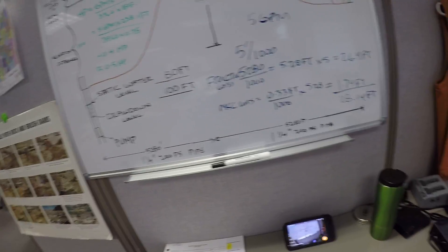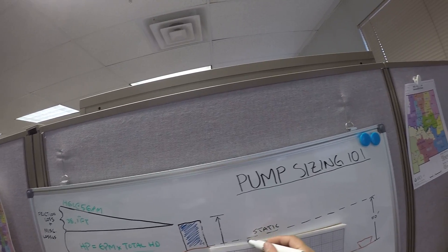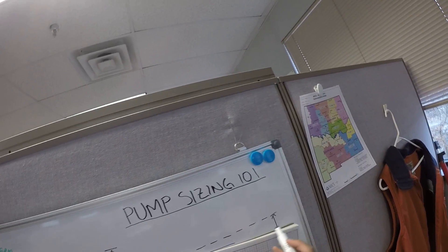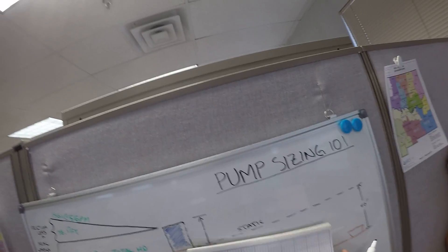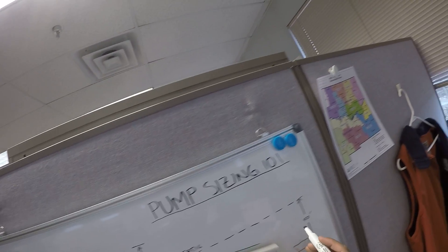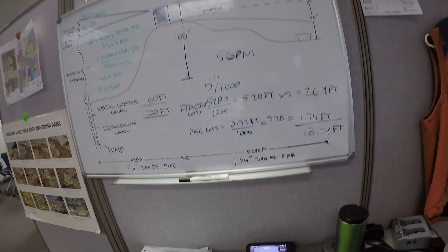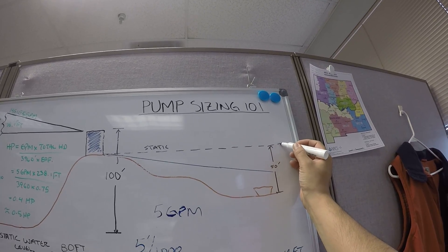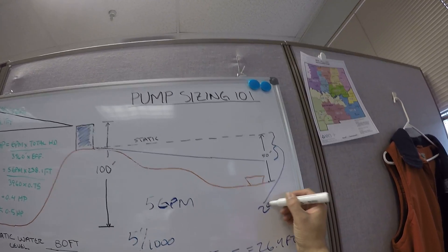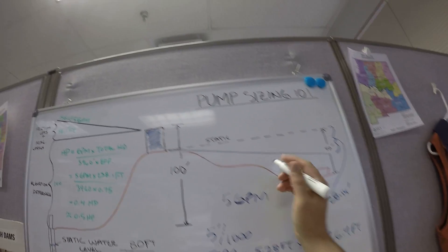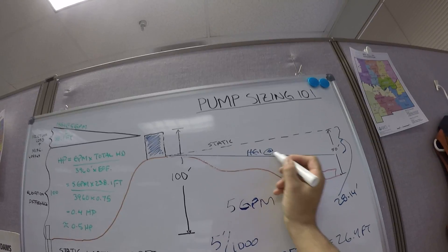So I'll draw a gray line, try to draw this as best as I can. Actually, realistically, it's going to go about half way. Okay, because that's 50 feet here, so the difference between here and the static is going to be 28.14. So let's just say, and that is HGL at 5 GPM.